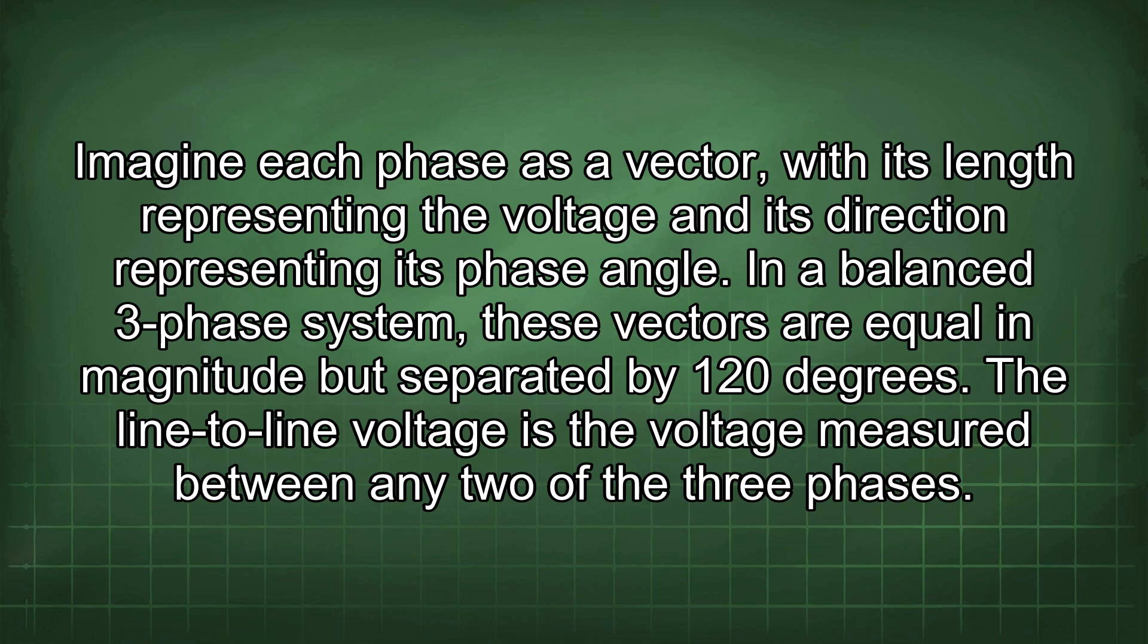Imagine each phase as a vector, with its length representing the voltage and its direction representing its phase angle. In a balanced 3-phase system, these vectors are equal in magnitude but separated by 120 degrees.